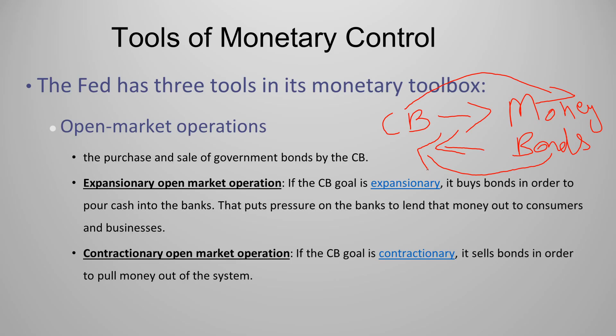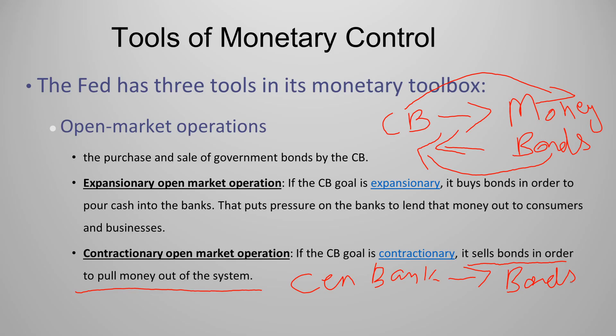On the other hand, in the case of contractionary open market operation, the government's aim is to decrease money supply in the economy. It will sell bonds in order to pull money out of the system. The central bank sells bonds to commercial banks, and the commercial banks in return give back money to the central bank. So the money available for commercial banks to lend to the public will decrease, reducing their capability to loan money to people, and the money supply will decrease as well.